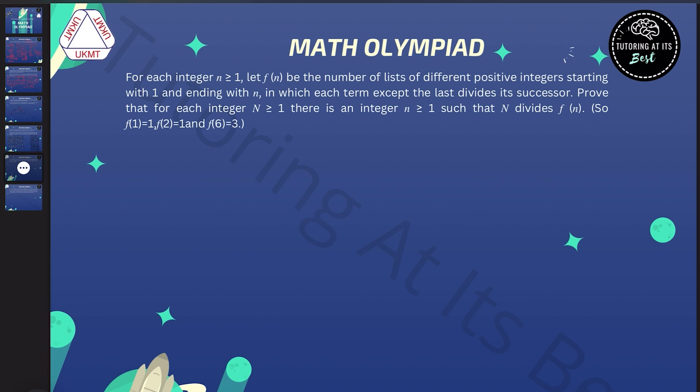In which each term except the last divides its successor. Prove that for each integer n greater than or equal to one, there is an integer such that n divides f(n).